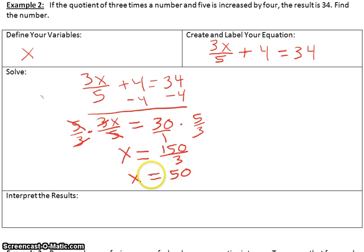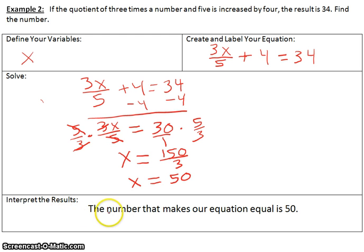So we need to interpret these results. We have X equals 50. The results are these. The number that makes our equation equal is 50.